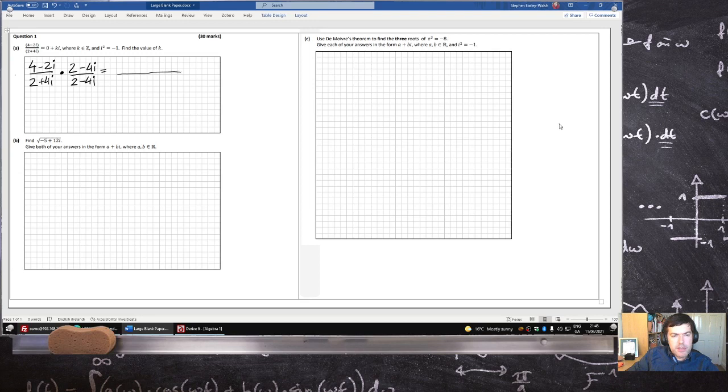So when we multiply out the top, that's 8, 4 times 2 is 8, then minus 16i minus 4i plus 8i squared is minus 8, and then on the bottom it'll be 4 minus 8i plus 8i minus 16i squared plus 16.